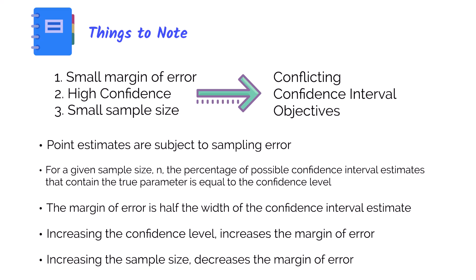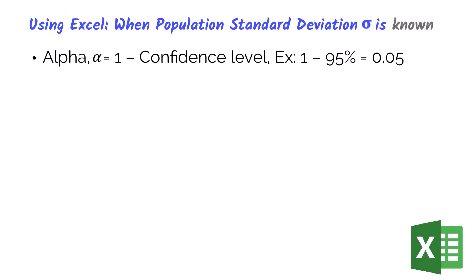There are some conflicting objectives here. As a decision maker, we want a small margin of error — being as close to the true population mean as possible allows better decisions. But we also want high confidence, since 99% is better than 80%. At the same time, we want a smaller sample size, because in business we have limited resources in time and money to collect sample data. So we need to find the right balance between these three things. Let's discuss how to use Excel to calculate our z-critical value and margin of error.